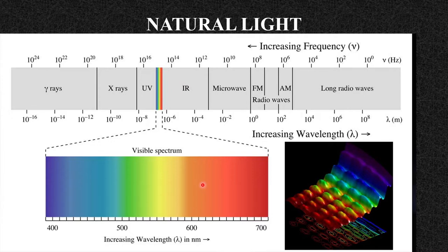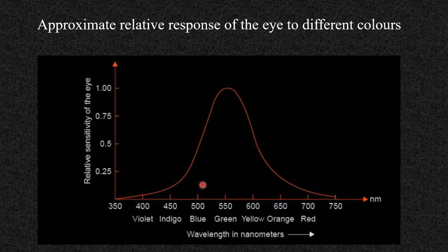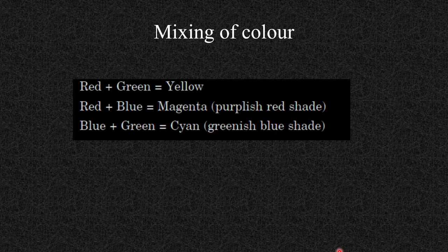When dealing with natural light, we must know the relative response of the eye to different colors. The wavelength in nanometers varies from 380 to 750 on the x-axis, and the y-axis shows the relative sensitivity of the eye. As wavelength increases, sensitivity increases and reaches maximum at green color — that is why green feels very pleasant — and then sensitivity decreases again. This is the relative response of the eye to different colors.